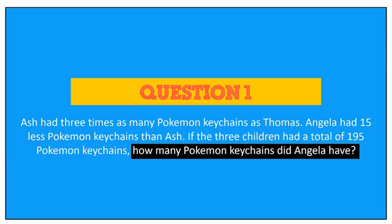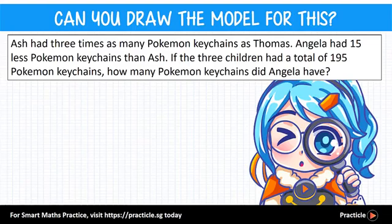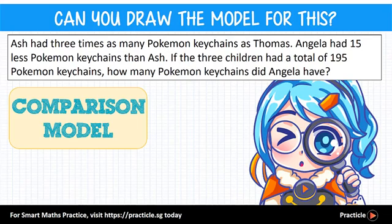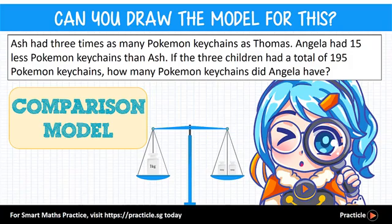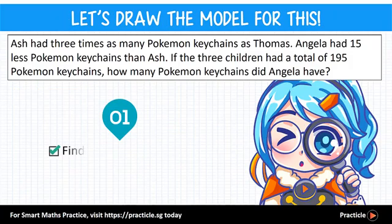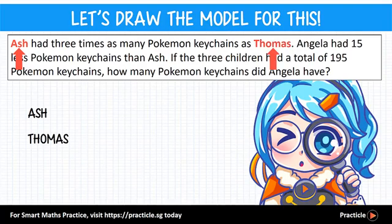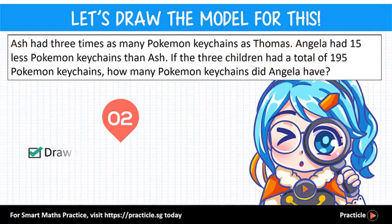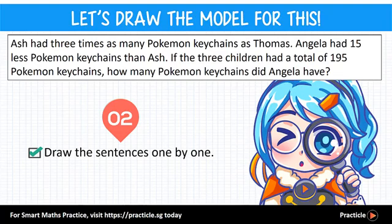What kind of model will we draw for this? As we are comparing the number of Pokemon keychains that the children have, we will be drawing a comparison model to help us see the difference between them. Step one is to find the people that we are comparing — Ash, Thomas, and Angela. Step two will be to break up the question into shorter sentences and draw the scenarios for each sentence one by one.